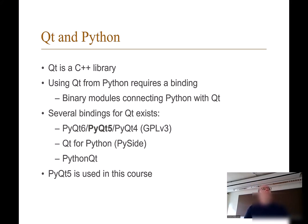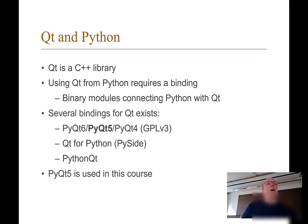Qt is a C++ library and using it from Python requires a binding - you see bindings in many cases, for example NumPy is a binding to a C library for array computing. There are several different versions of the Qt Python binding: PyQt6, PyQt5, PyQt4, and Qt for Python (formerly called PySide). In this course we are going to focus on PyQt5, as PyQt6 still has too few supporting libraries.